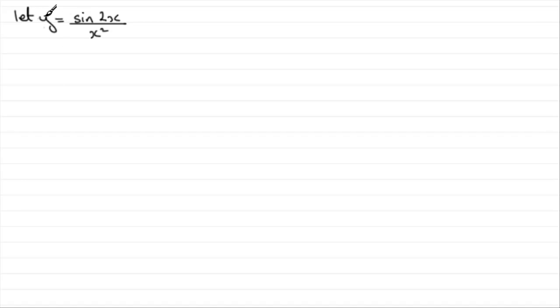So you don't have to say y, you can say any other letter if you like. You can say z equals sine 2x over x squared. But if you do say that, then it will be therefore dz by dx and so on. So we've said let y equal sine 2x over x squared.